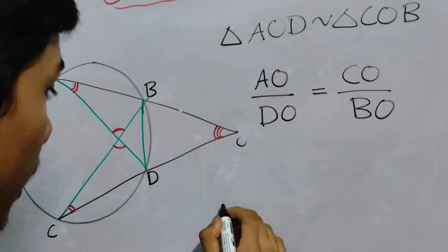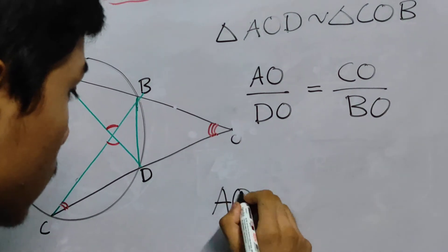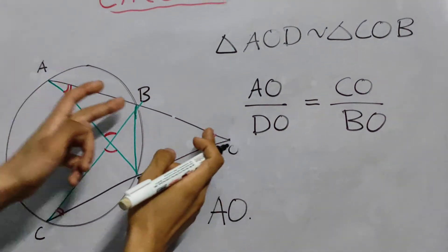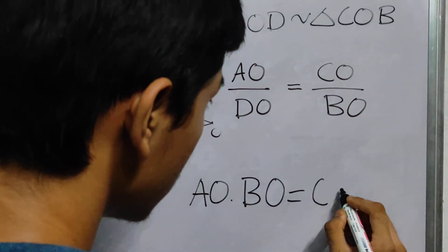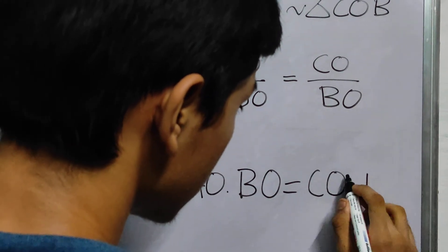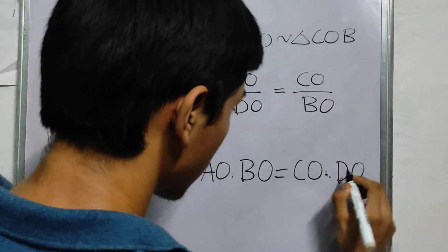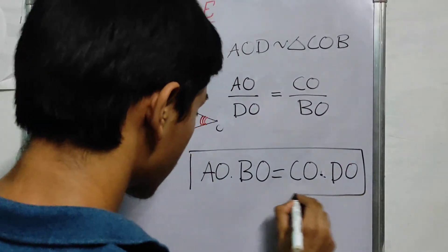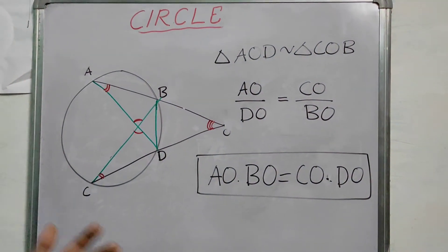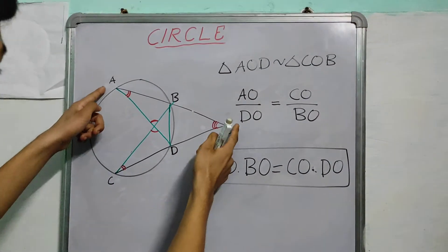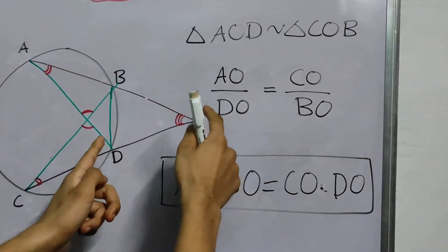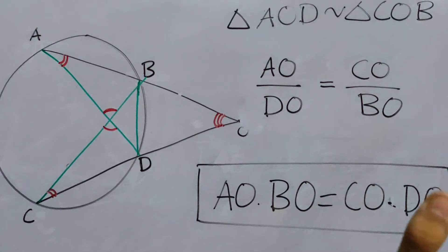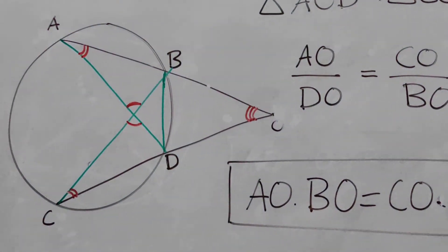And from this we get AO times this length, times BO equals CO times DO, which was exactly our previous result. Now, this times this equal to the big length times this one. I hope it's really clear. Now I'll give you a question.